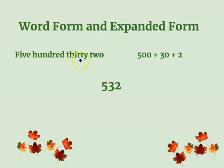Word form, like you see here, is just using words to write the number instead of just writing the number. Expanded form is just a fancy way of writing the number using each place value — or another way of saying it, stretching out the number using zeros.